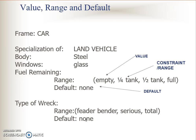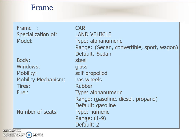This is the full frames for car. The frame name is car, specialization is land vehicle. The type is alphanumeric for the model, the range for model is sedan, convertible, sport, or wagon, and the default is sedan. Body is steel, windows glass, mobility self-propelled, mobility mechanism has wheels, tires out of rubber. Fuel type is alphanumeric, range is gasoline, diesel, or propane, and the default is gasoline. Number of seats has type numeric, range 1 to 9, and the default is 2. By now you should know how to limit the values for each slot and ensure the type of entry is correct.